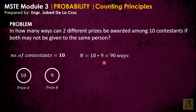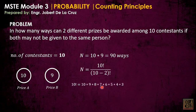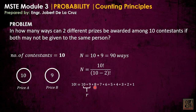This solution can be rewritten as ten factorial over the quantity (ten minus two) factorial. Ten factorial can be written as ten times nine times eight times seven and so on until one. All we want here is just ten times nine, so we need to eliminate eight, seven, six, five down to one. Let's call the two prizes r, and this is our r.